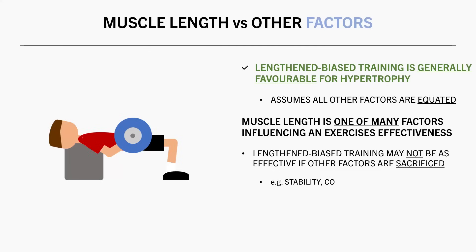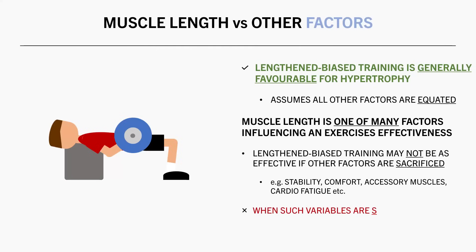Other factors such as stability, comfort, the involvement of accessory and stabilizer muscles, and the degree of cardiorespiratory fatigue can all influence the effectiveness of an exercise. And in some cases, when some of these other variables are sacrificed, it may counteract the benefit of lengthened bias training.